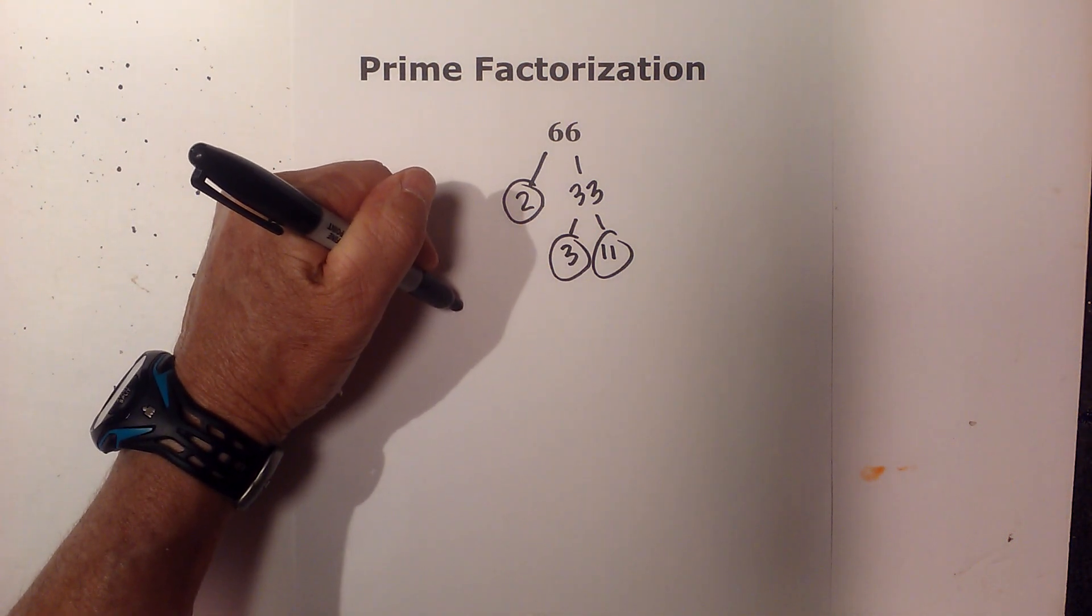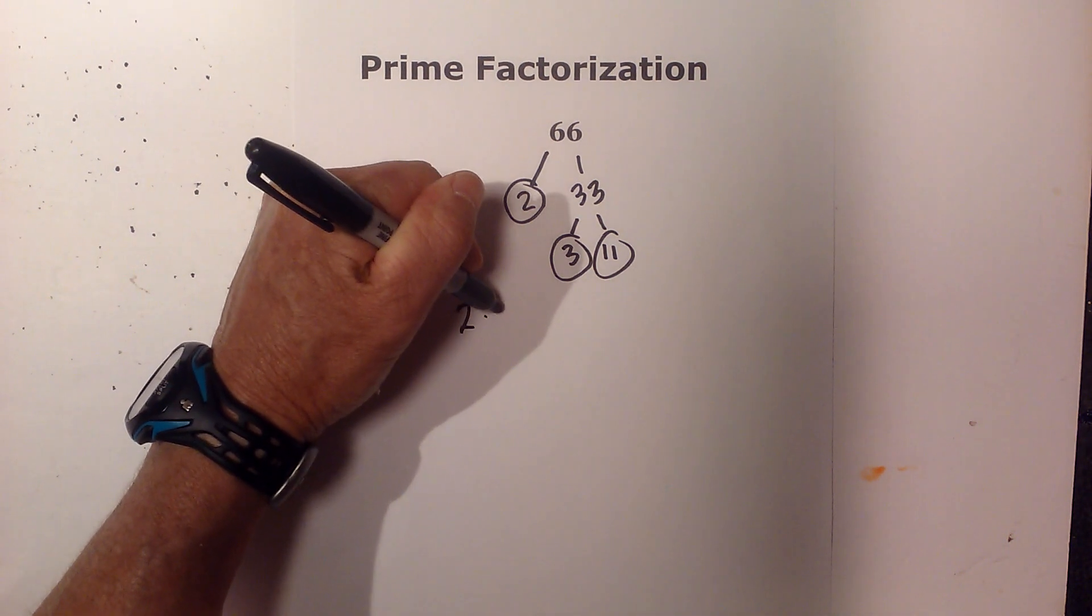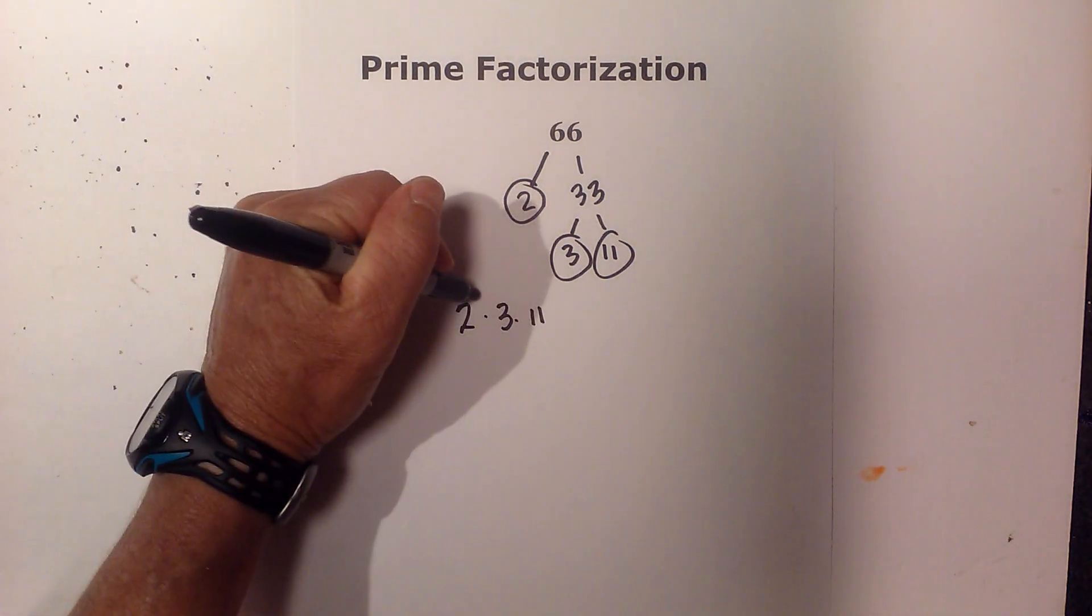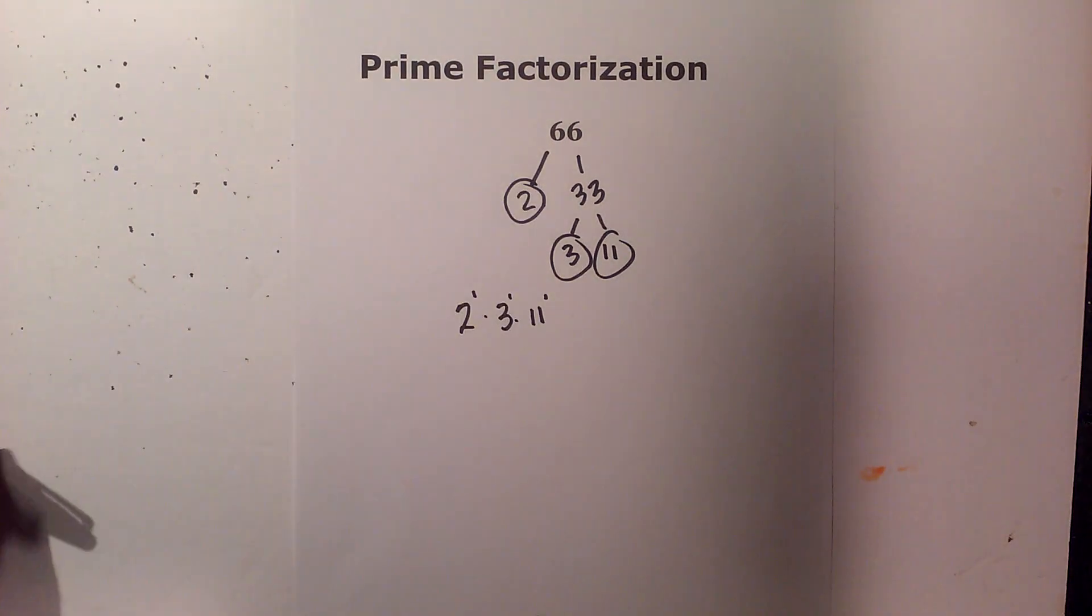So the prime factorization of 66 is 2, 3, and 11. And you can also write these to the first power. You may see it like that.